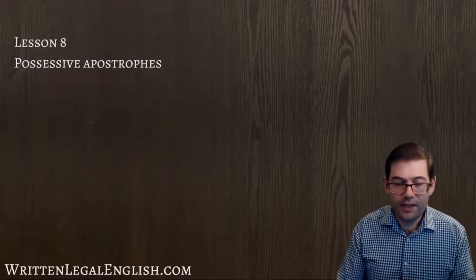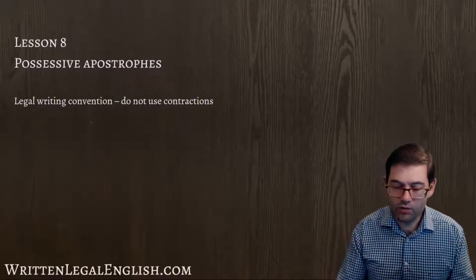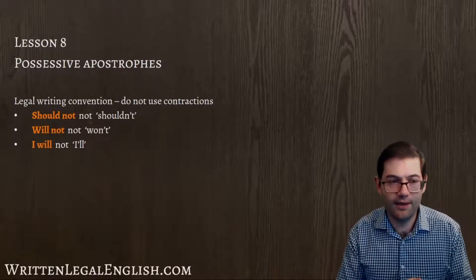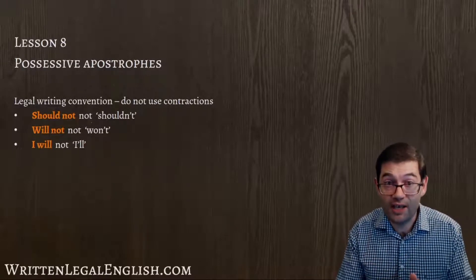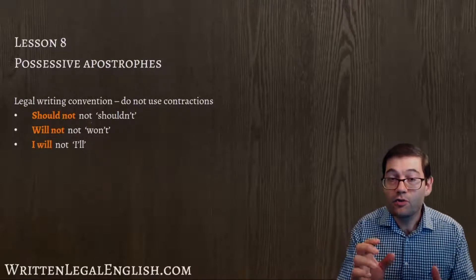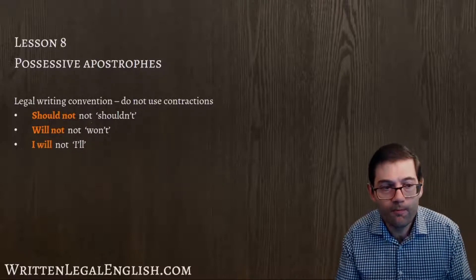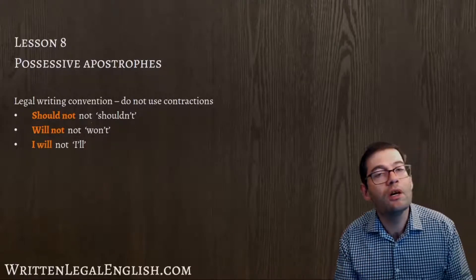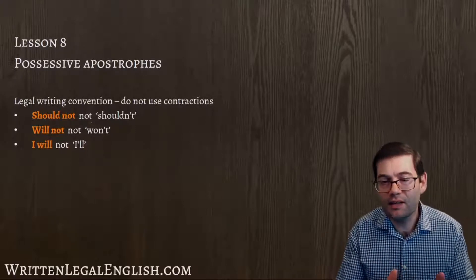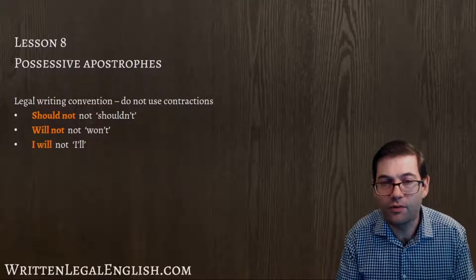One convention is that you should not use contractions. Contractions are where we join two words together. So you should say 'should not' — you cannot write 'shouldn't'. You should write 'will not' — you cannot write 'won't'. You can write 'I will' — you can't write 'I'll'. This is an example of a legal English writing convention and everyone should follow those rules.